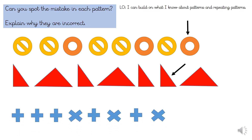Finally, let's look at this pattern. How does it repeat? Can you spot where the pattern is incorrect? Can you explain what should happen in the pattern? Super spotting skills, Year 2 — you can see here the incorrect shape has been used. Well done.